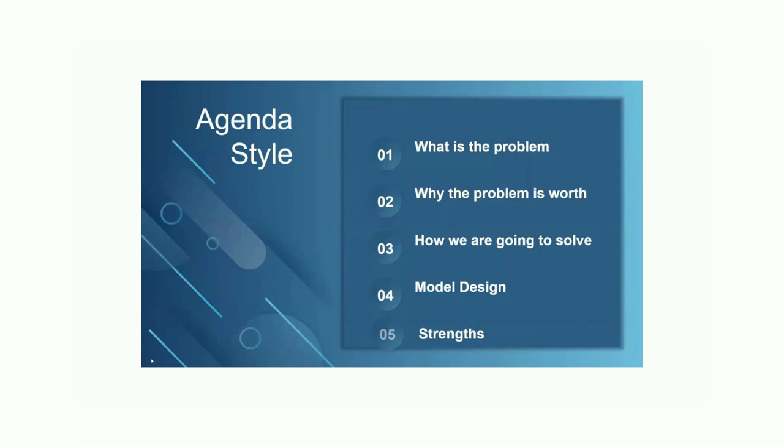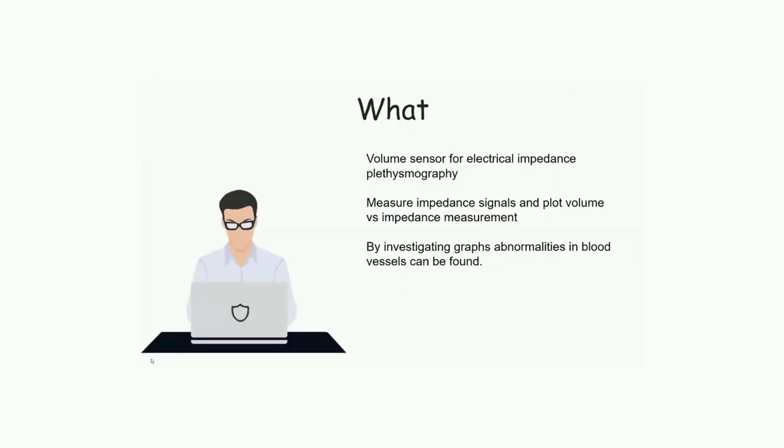First of all, we have addressed the problem, then we have investigated the problem and this is the path that we are going to proceed in this presentation. The apparatus we are going to build is a volume sensor for electrical impedance plethysmography, which measures impedance signal and plots its volume against impedance measurement. By investigating the plots, we can identify any abnormalities in blood vessels, if there is any.